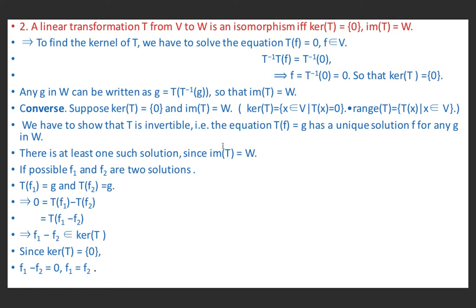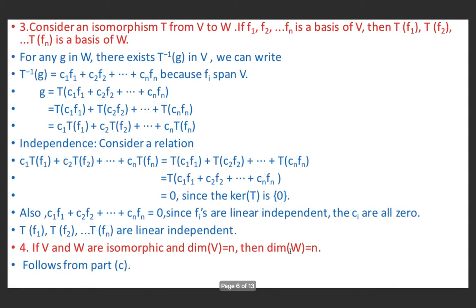Thus T(f) = g has a unique solution for any g ∈ W, meaning T is invertible and therefore an isomorphism from V to W. Next property: consider an isomorphism T from V to W. If f₁, f₂, …, fₙ is a basis of V, then T(f₁), T(f₂), …, T(fₙ) is a basis of W. Since T is an isomorphism it is one-one and onto, so T⁻¹ always exists.